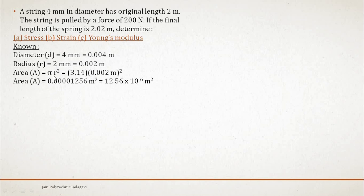Area is given by pi r square. You can also use pi by 4 into d square. So pi r square, pi value is 3.14, radius value is 0.002 meter squared. So the area is 0.001256 meter square or 12.56 into 10 raised to minus 6 meter square.